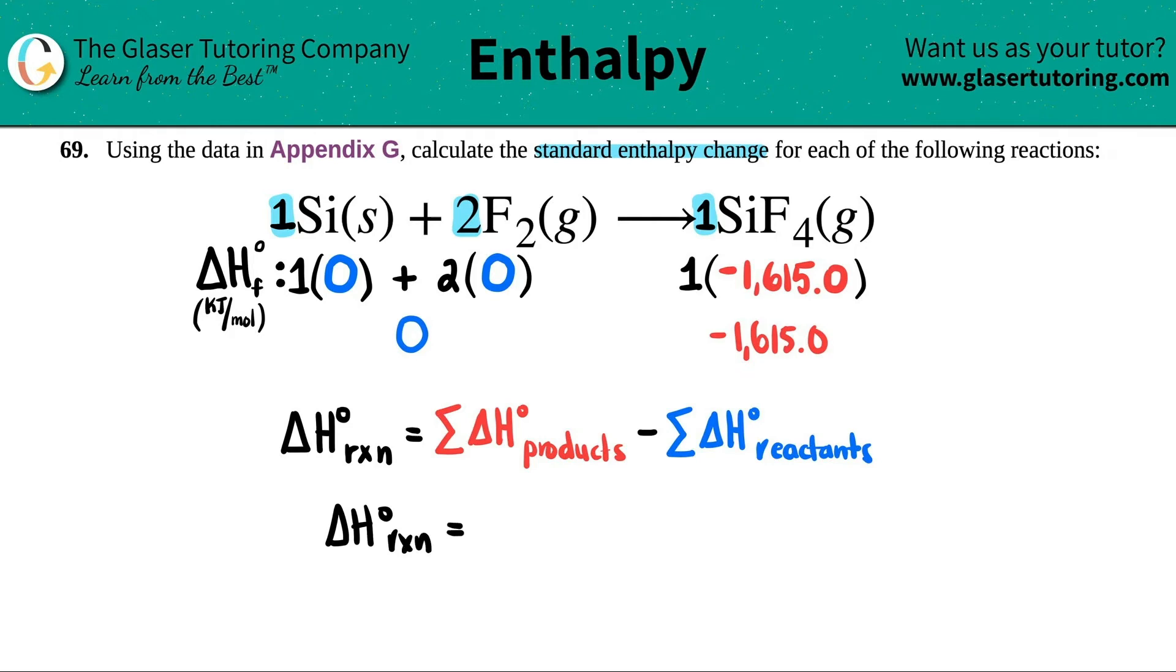Now we're ready to do the math. So the sum of the products, negative 1,615.0 minus sum of the reactants, zero. So this one was easy. The delta H for the whole reaction would just be negative 1,615.0.